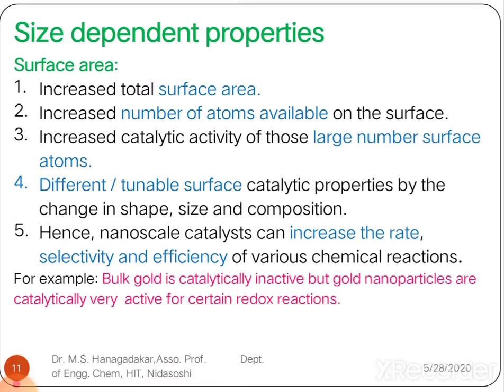For example, bulk gold is catalytically inactive, but gold particles at the nanoscale are catalytically very active for certain redox chemical reactions. This is about the first property of nanoparticles related to surface area.